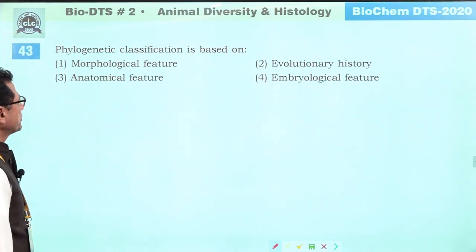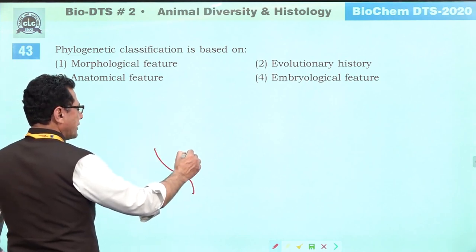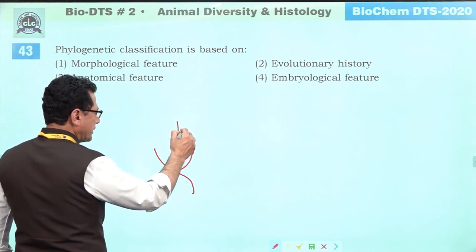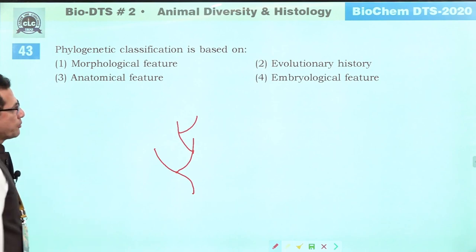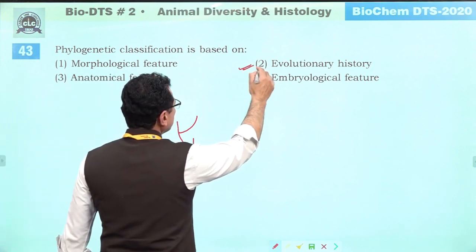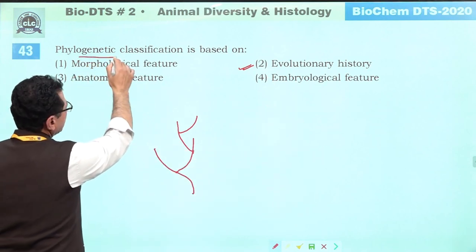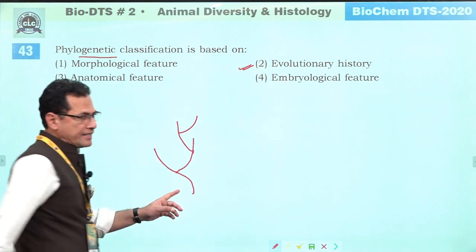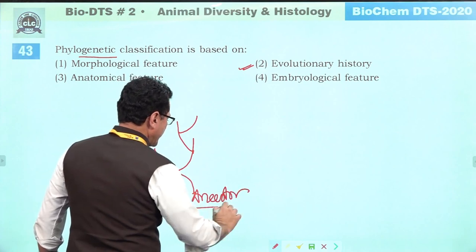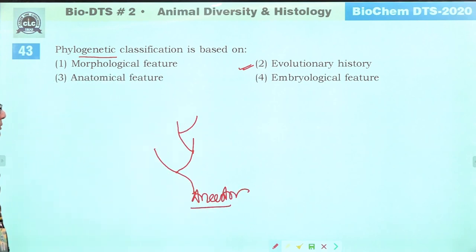Phylogenetic classification is based on evolutionary history of organisms — which organism evolved from which ancestor. It depends on the ancestor and the evolutionary line. So correct answer is second: evolutionary history.